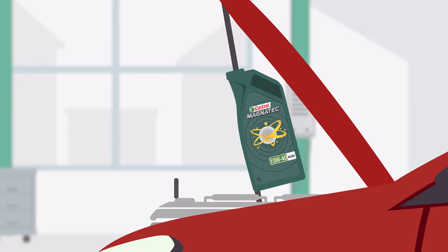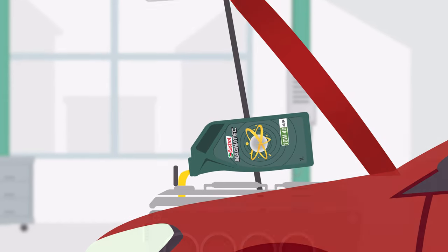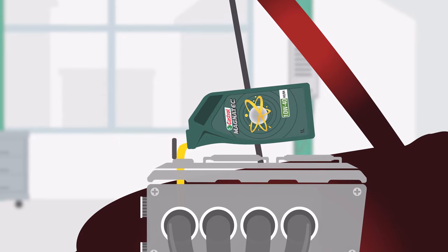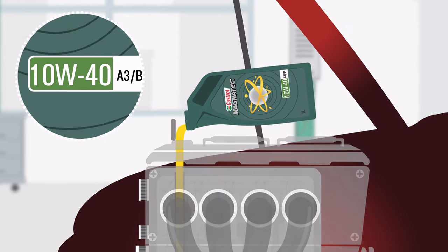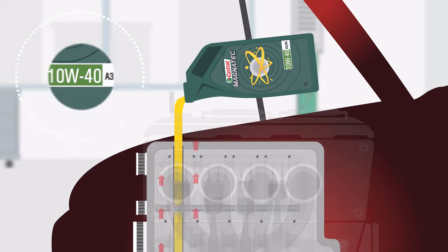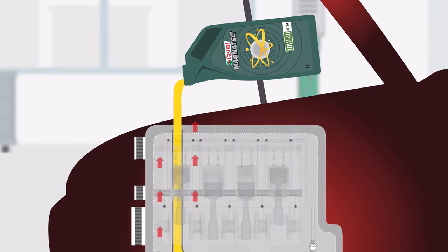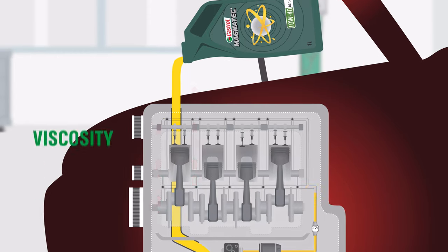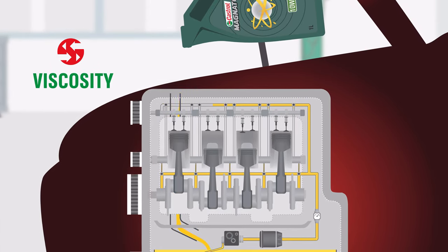Now let me tell you a bit about the origin of engine oil grades. All oils have a resistance to flow. This resistance to flow has been assigned a number by the Society of Automotive Engineers, commonly known as the SAE. We call this number the oil viscosity grade.